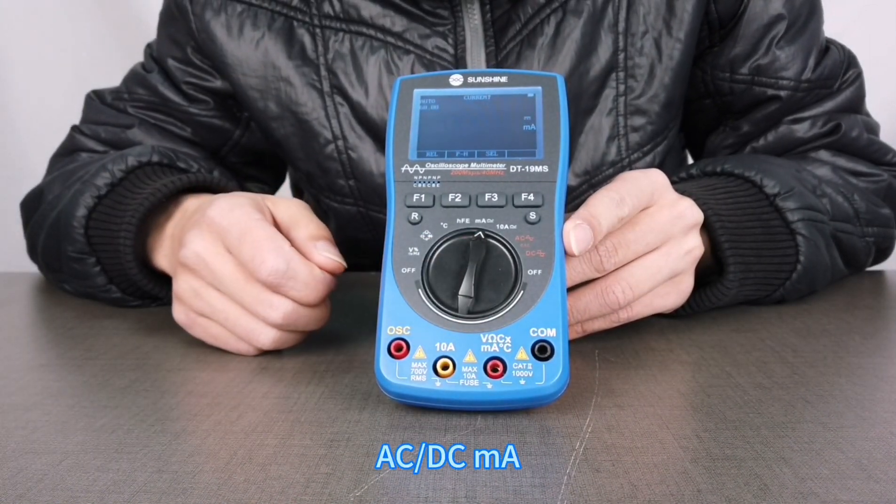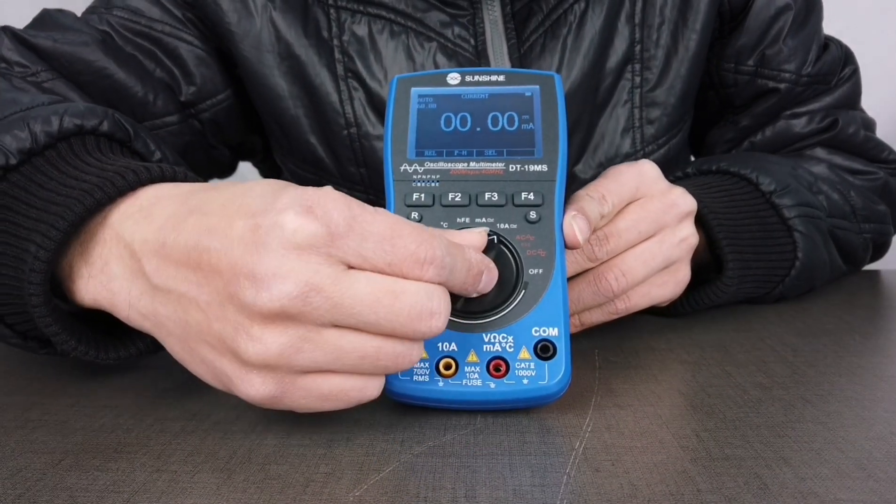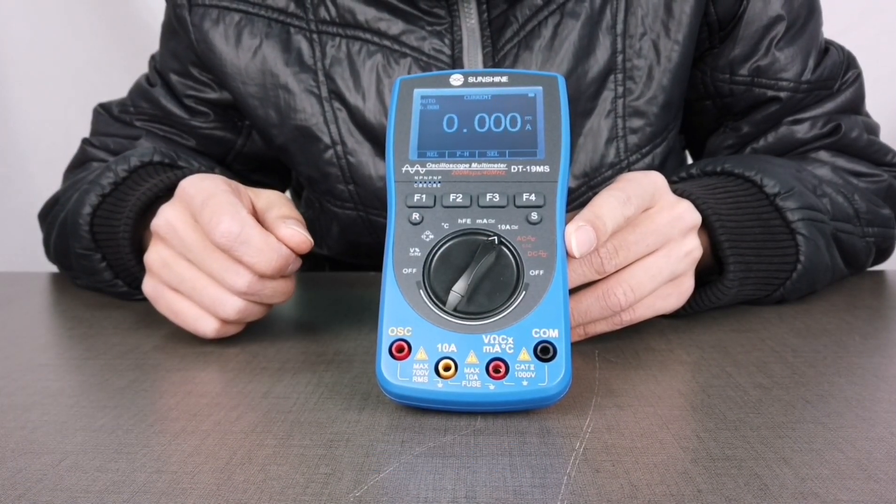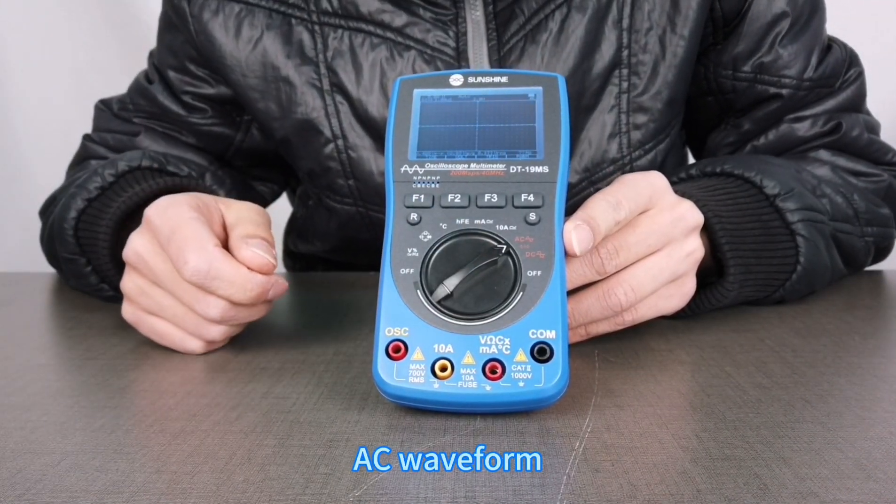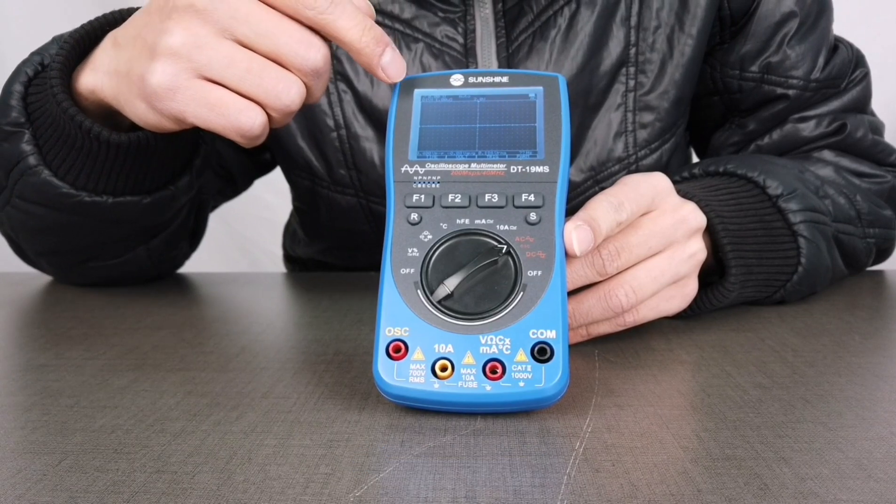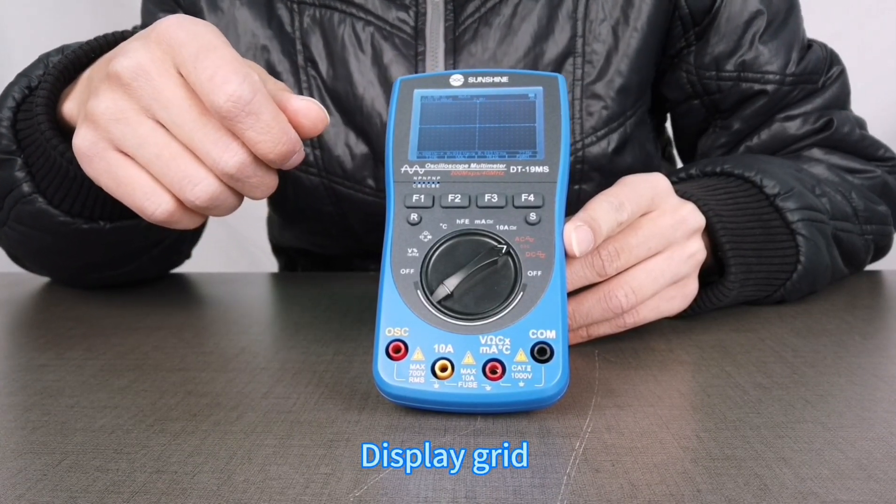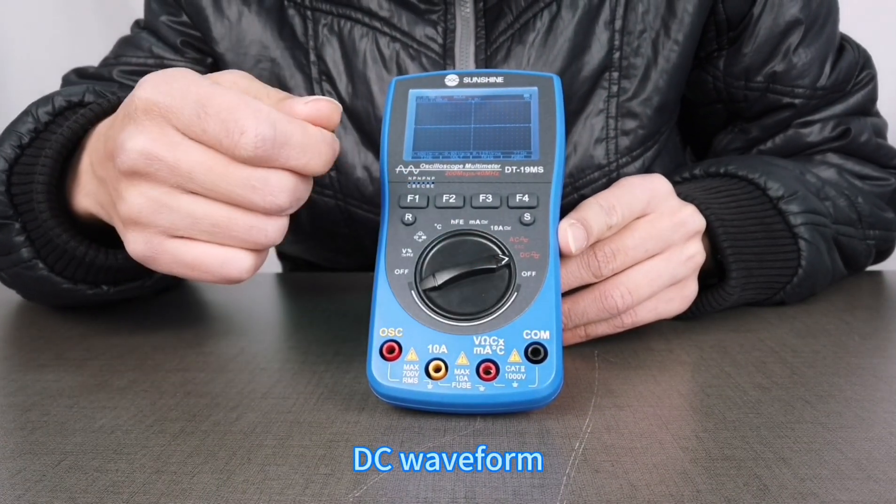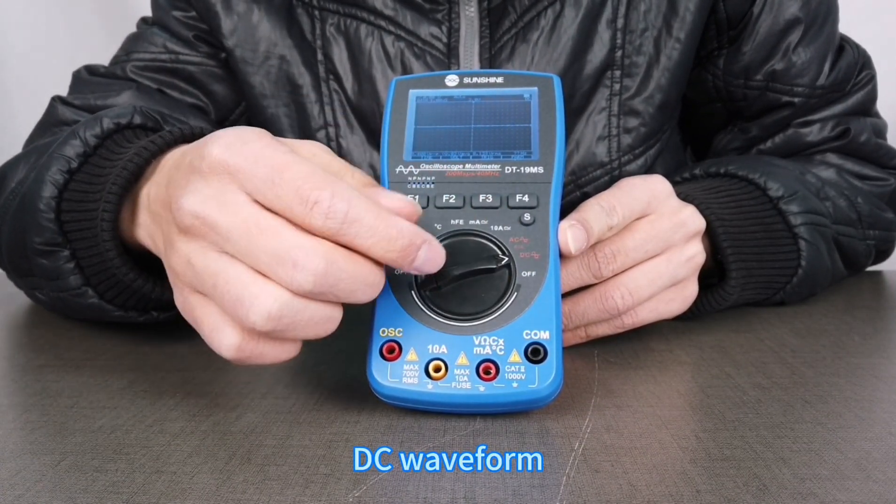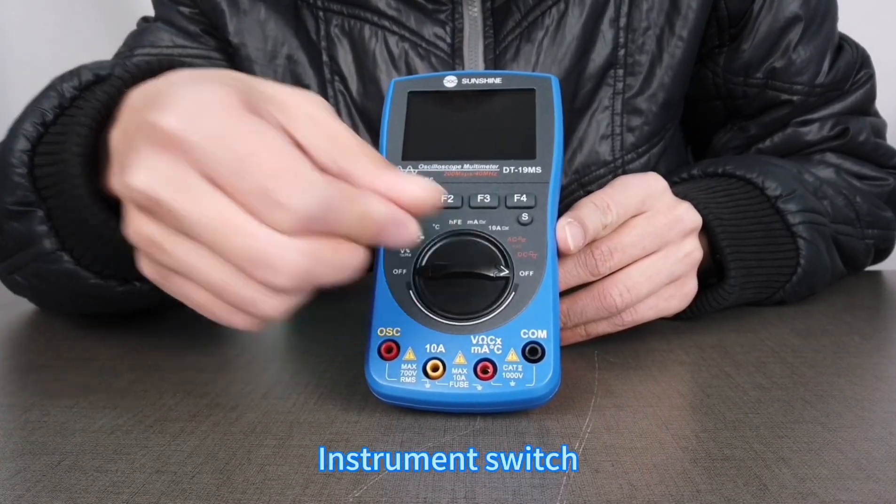It has AC/DC voltage mode, AC/DC current mode, AC waveform display with grid, DC waveform display, and an instrument power switch.